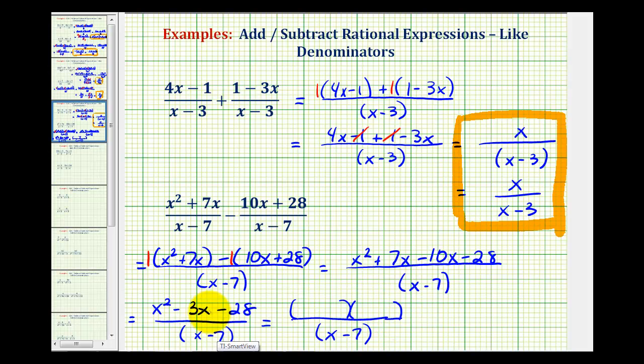The first terms come from the factors of x squared, which are x and x. And now we want the factors of negative 28 that add to negative 3. Well, that would be negative 7 and positive 4. So we'd have x minus 7 here and x plus 4 here.